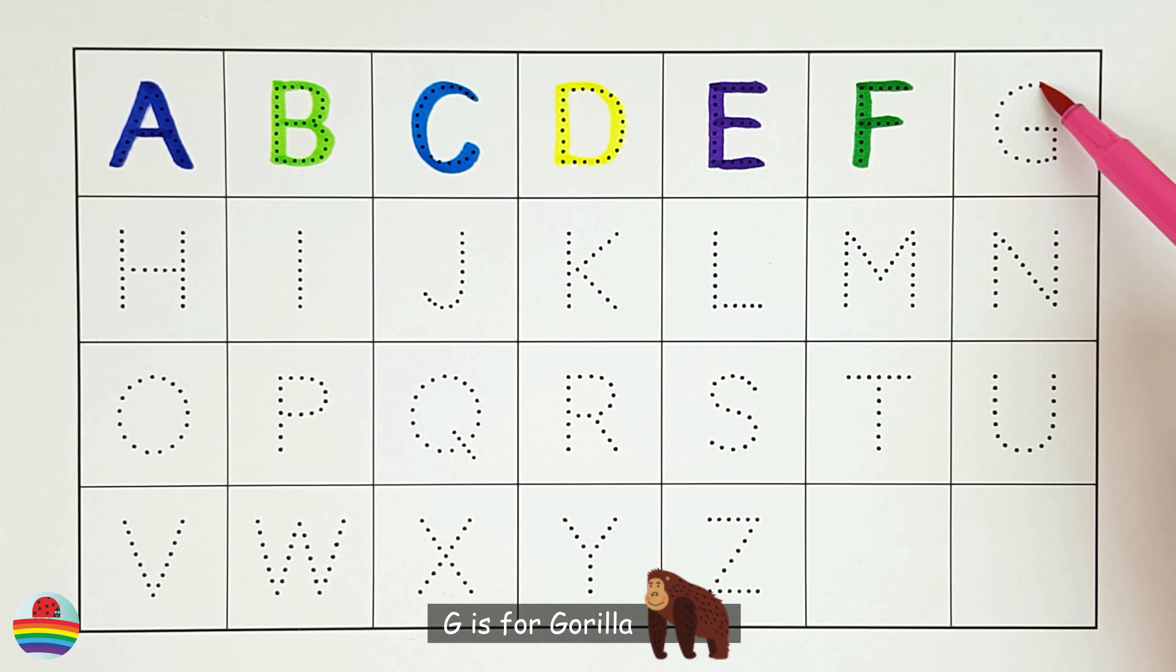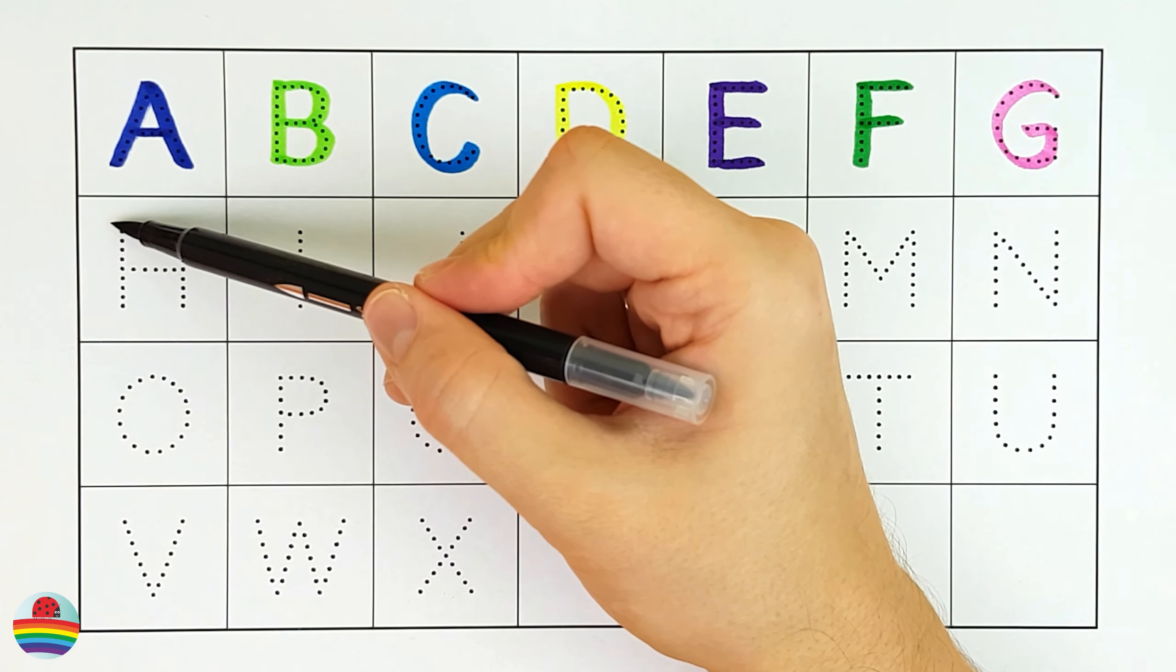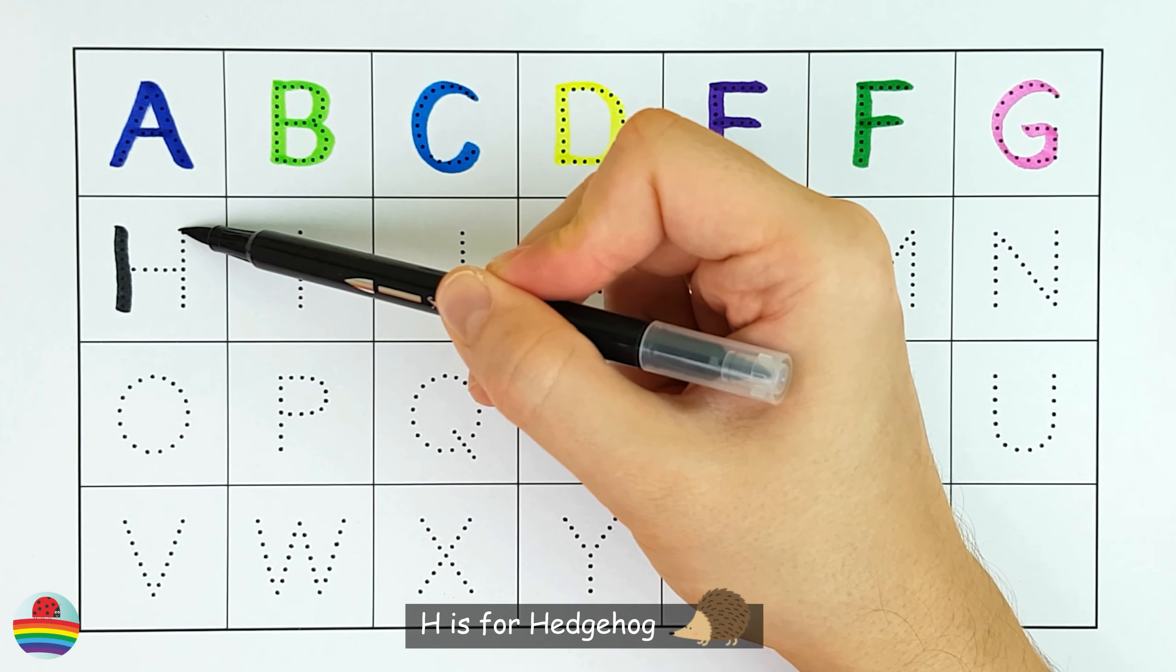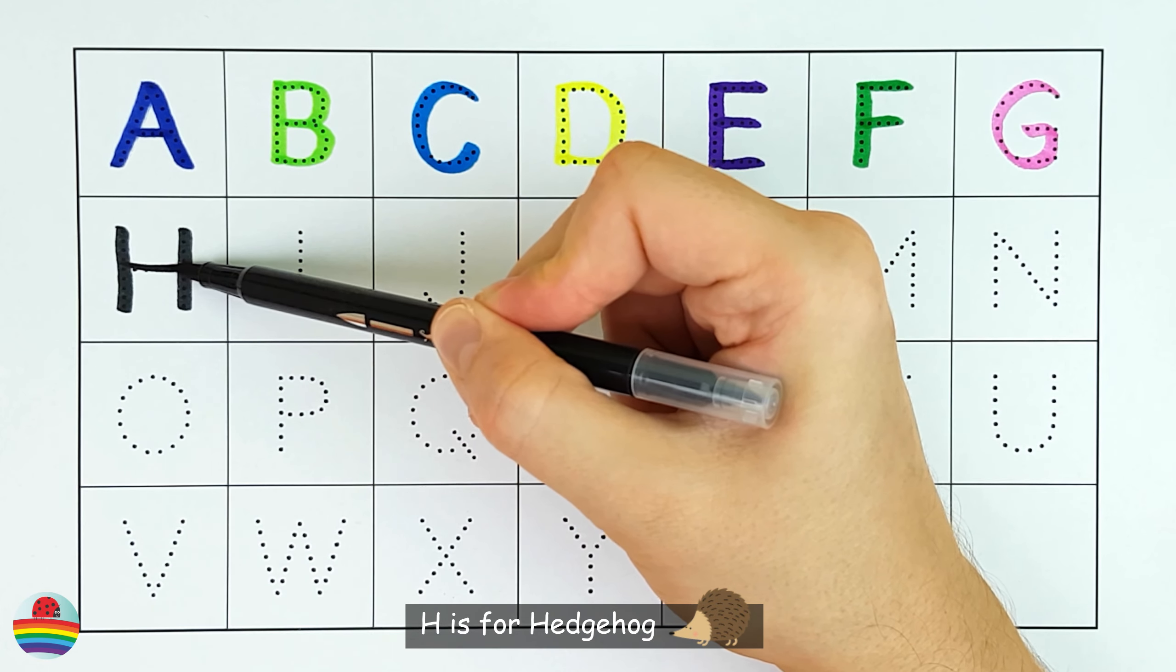G. G is for gorilla. G. H. H is for hedgehog. H.